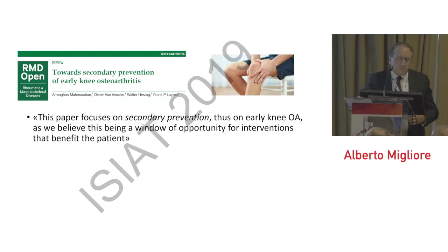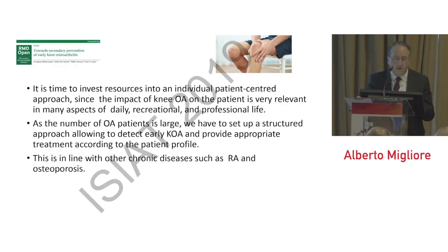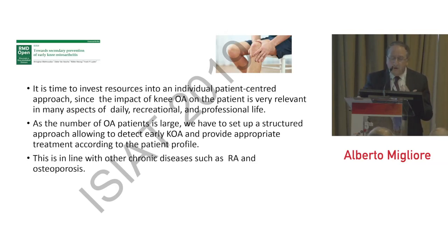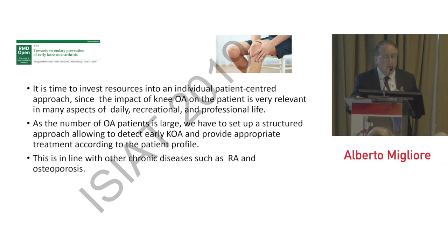One paper discusses secondary prevention in early knee osteoarthritis as a window of opportunity for intervention that benefits patients. The authors state it is time to invest resources in an individual patient-centered approach, given the large patient numbers and significant impact of knee OA. A structured approach to detect early knee OA and provide appropriate treatment according to patient profile is necessary, in line with other chronic diseases such as rheumatoid arthritis and osteoporosis.